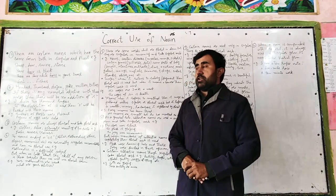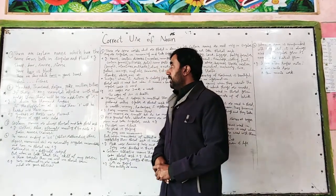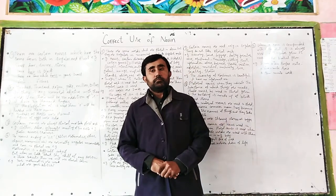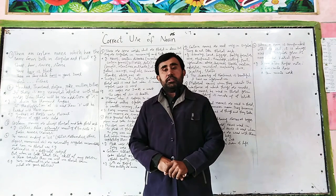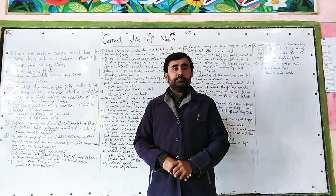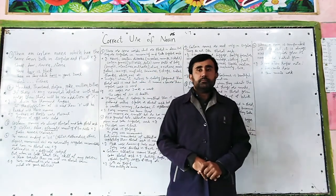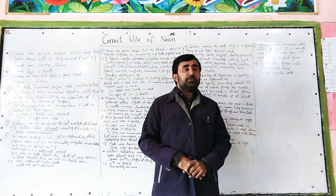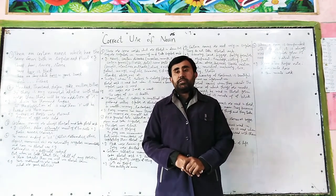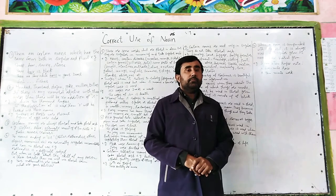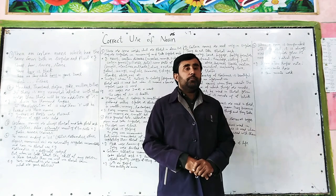These nouns are sheep and deer. For example: 'The sheep is grazing in the field' and 'The sheep are grazing in the field' — both are correct. We do not use 'S' to make them plural. They have the same form both in singular and plural.